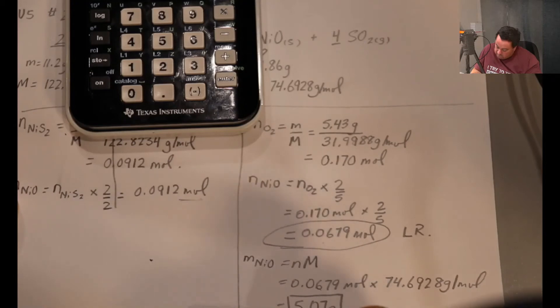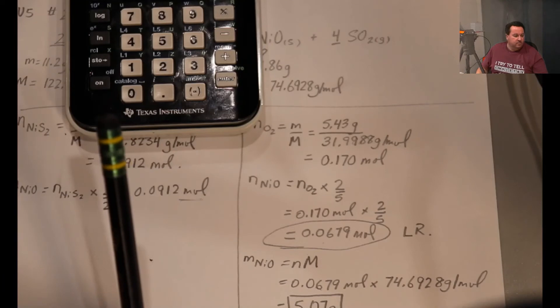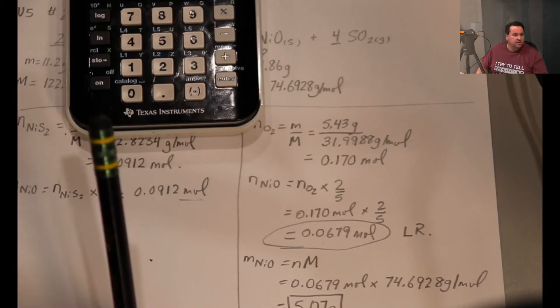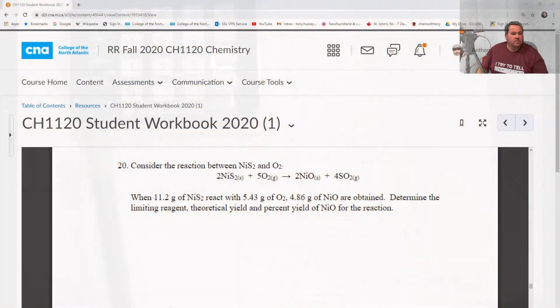5.07 grams. Now if we just go back and check our question again: when 11.2 grams of Ni2S3 react with 5.43 grams of oxygen, 4.86 grams of NiO are obtained. Determine the limiting reagent, so we've done that.